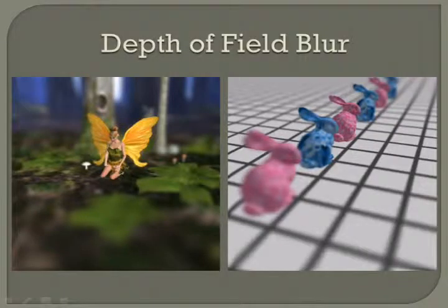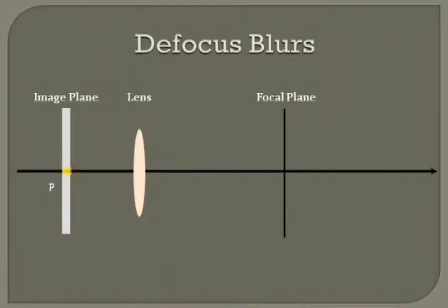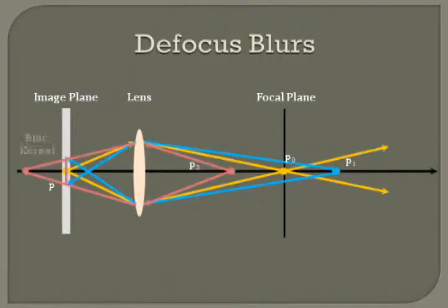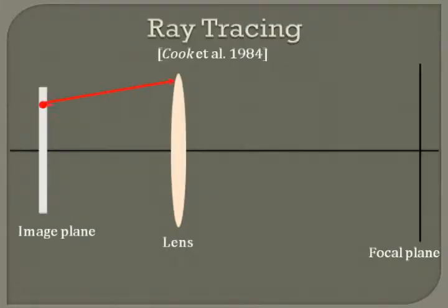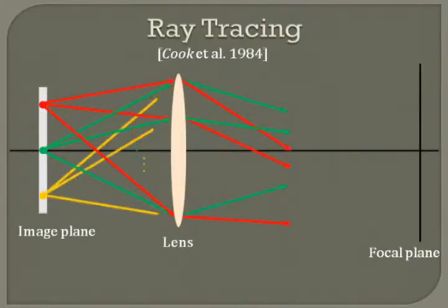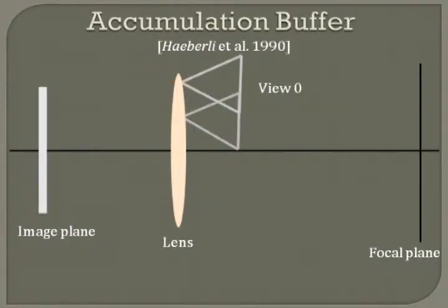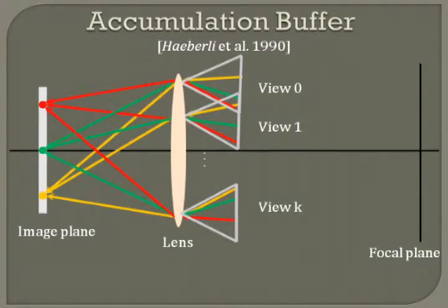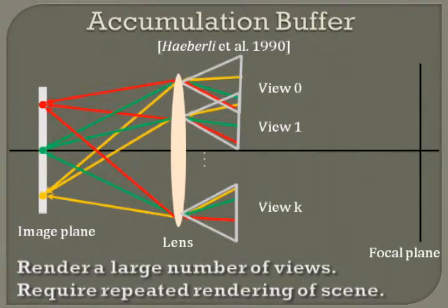Depth of field effects greatly enhance visual realism by emphasizing the in-focus region. The basic causes of defocus blur are well studied: a point focusing in front of or behind the image plane splats a circle of confusion on the image plane. Accurate depth of field effects can be simulated offline by distributed ray tracing. Alternatively, it's possible to reorganize rays into multiple cameras on the lens and then accumulate them. However, repeated rendering of a scene is also expensive.